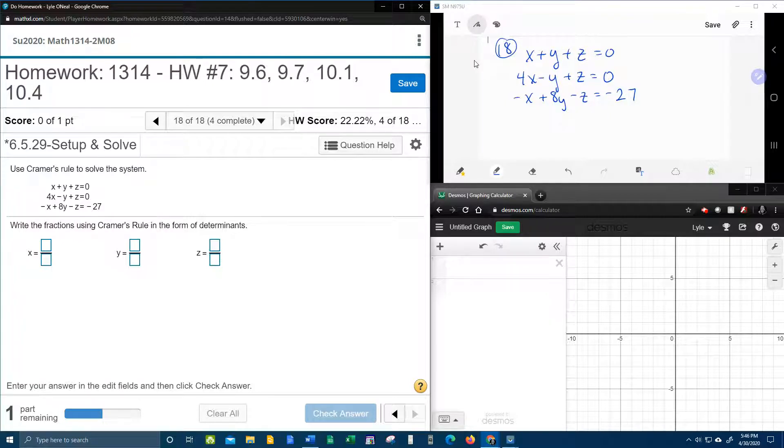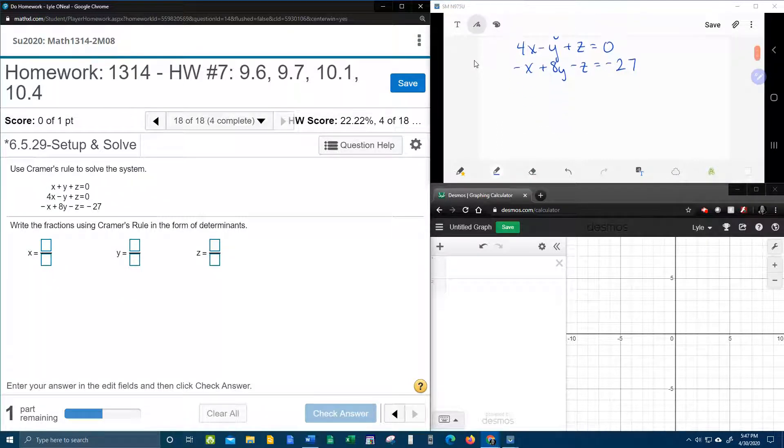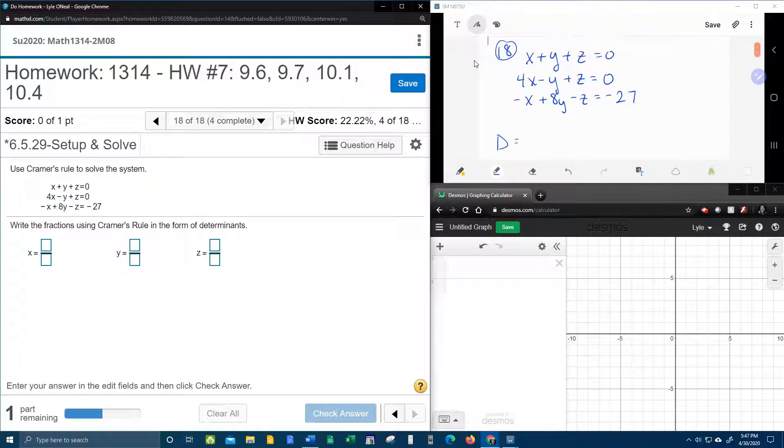The first thing I notice over here in my window is that my equations are set up correctly. I've got my x's, my y's, and my z's. All of the variables are on the left-hand side. They're all lined up. All of the constants on the other side. And so this set of equations is set and ready to find the determinants.